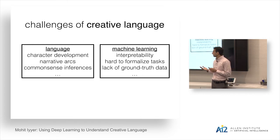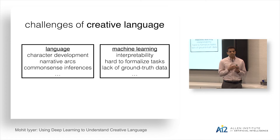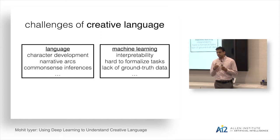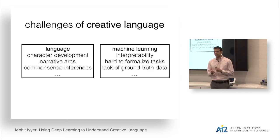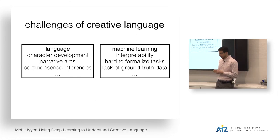What I'll be talking about, at least for a couple of the projects I'll discuss, is unsupervised learning approaches where we prioritize model interpretability over performance on a downstream task. The reason for this is that we don't have any ground truth data, so we want a model whose representations we can look at and interpret, mapping them back to what we know about the original creative text.